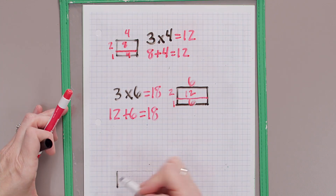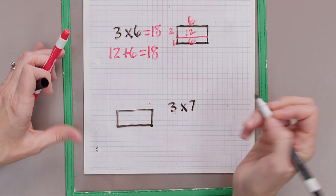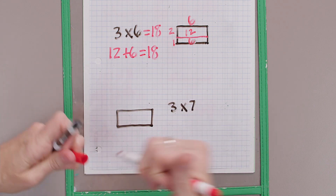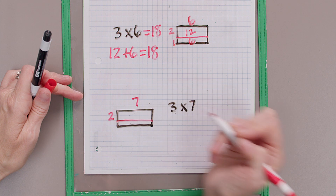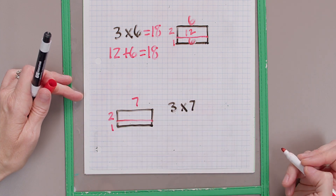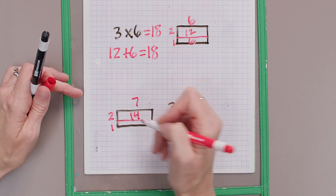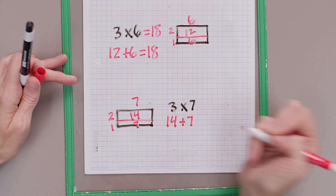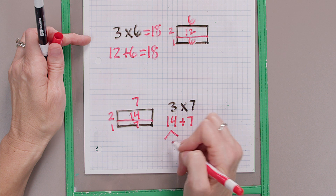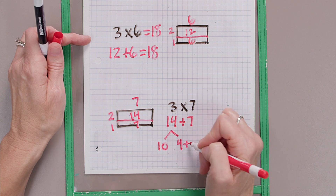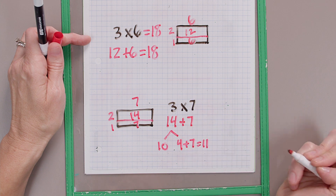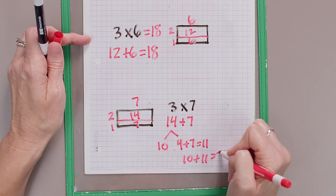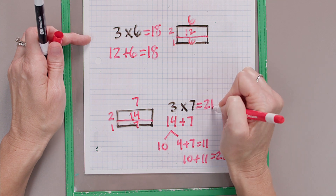Let's try three times seven. Draw a three by seven rectangle on your graph paper. We're solving three times seven. Don't know three times seven just yet. But what do I know? I know two times seven and one times seven. Two times seven is 14, and one times seven is seven. Now we're going to add those together. 14 plus seven — might be a little tricky, that's okay. I think of it as a 10 and a four. Four plus seven equals 11, then 10 plus 11 equals 21. Three times seven is 21.